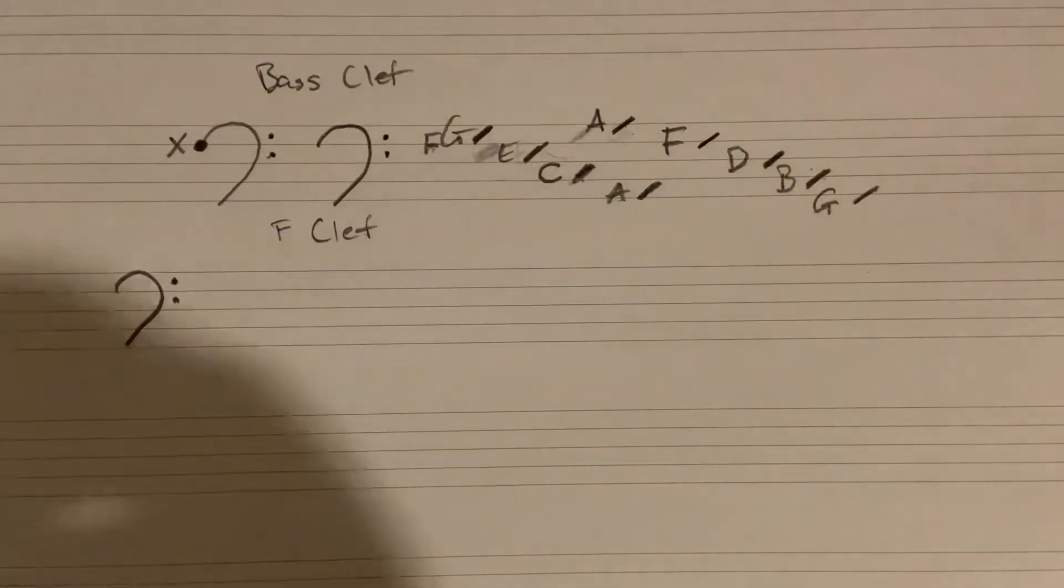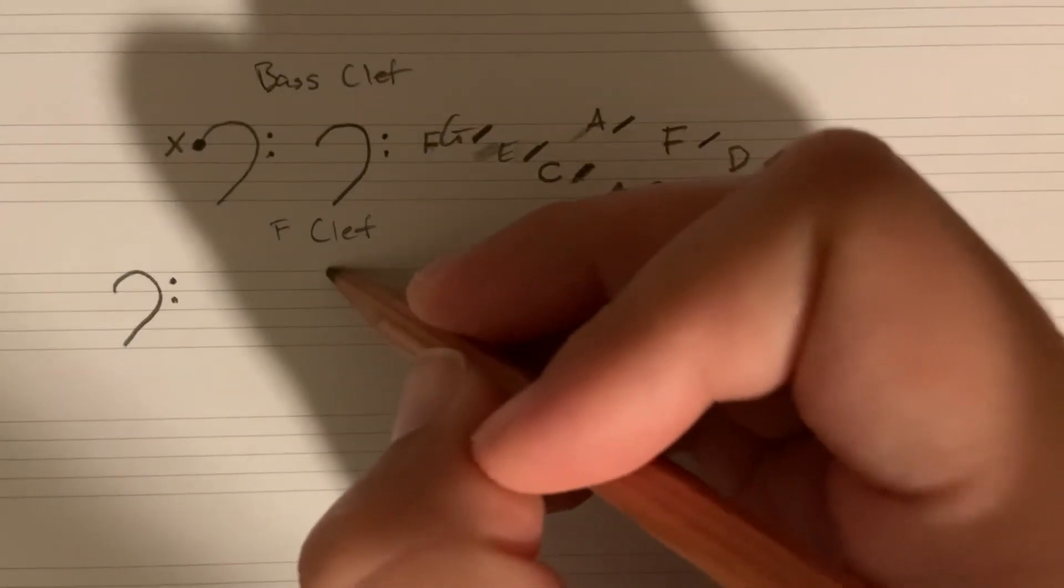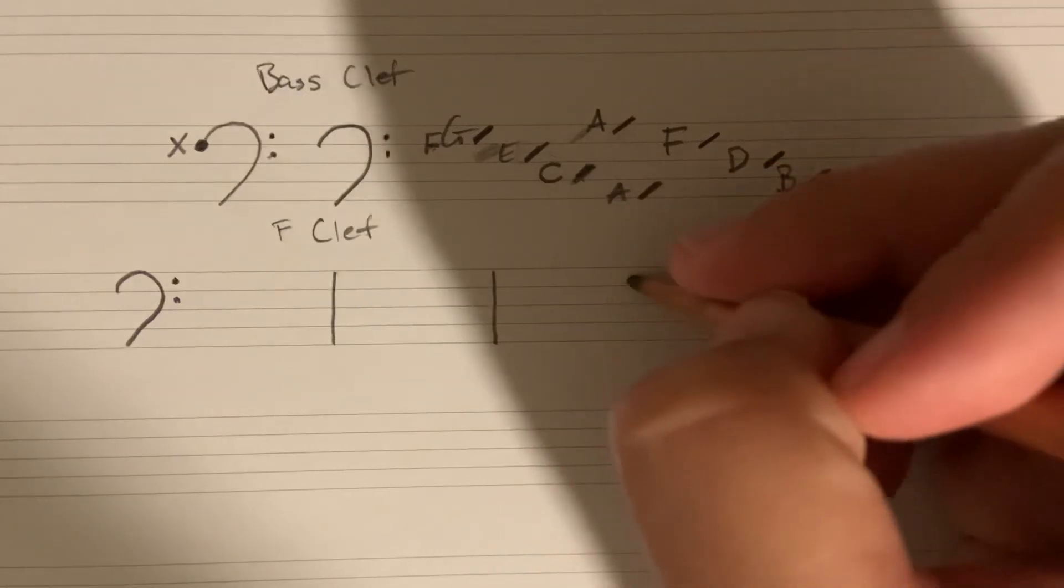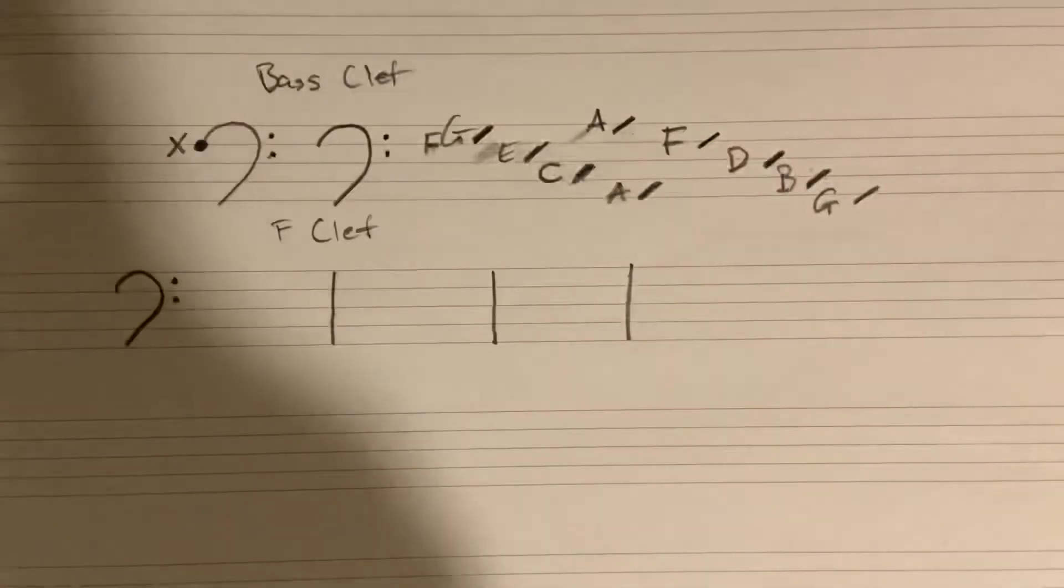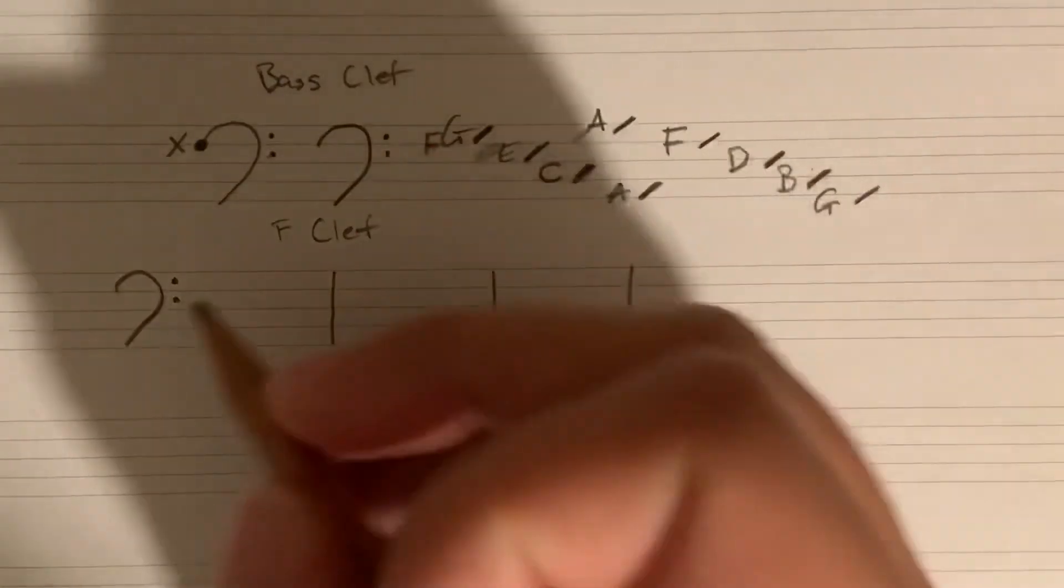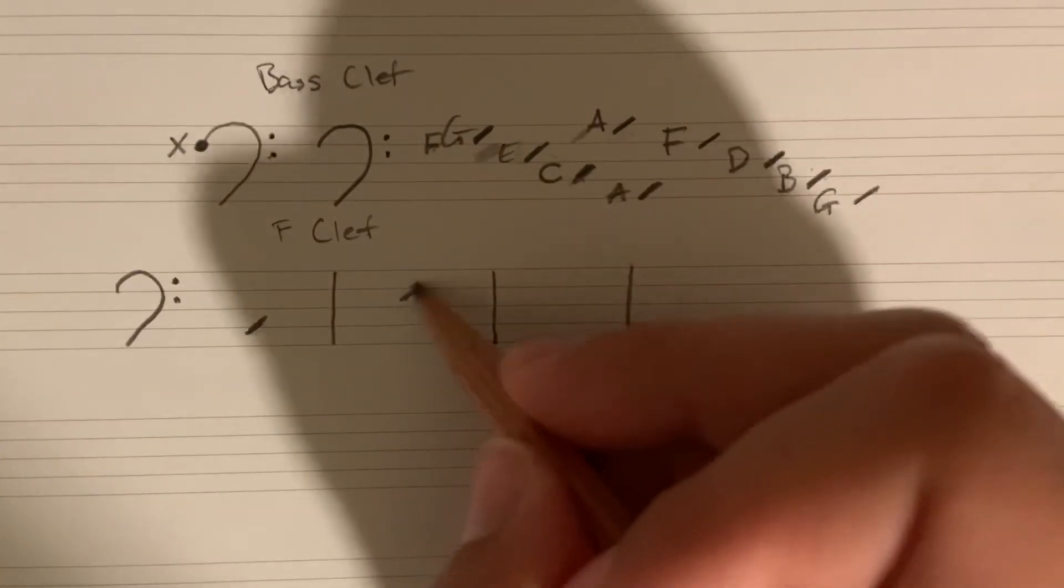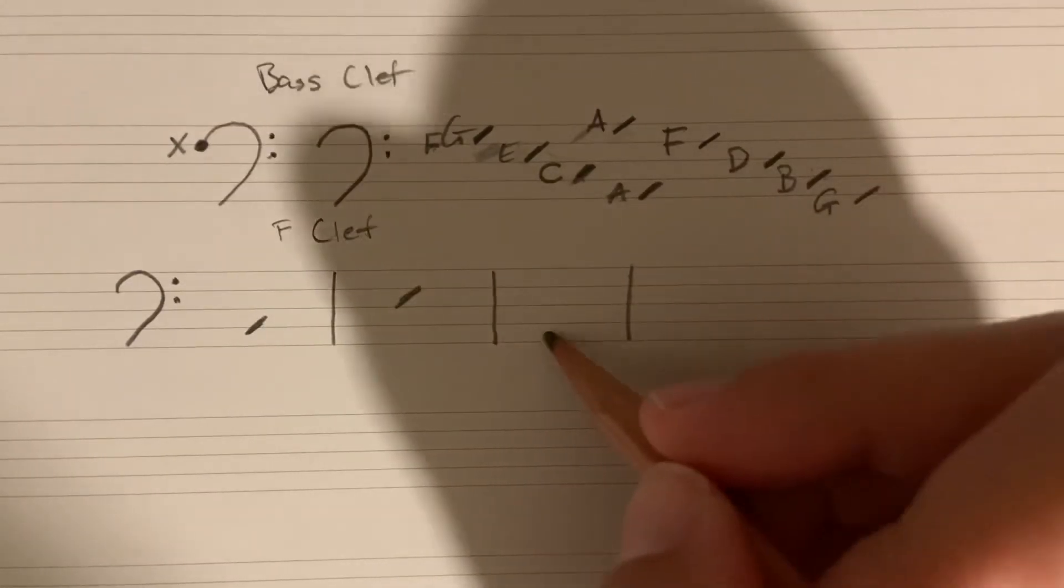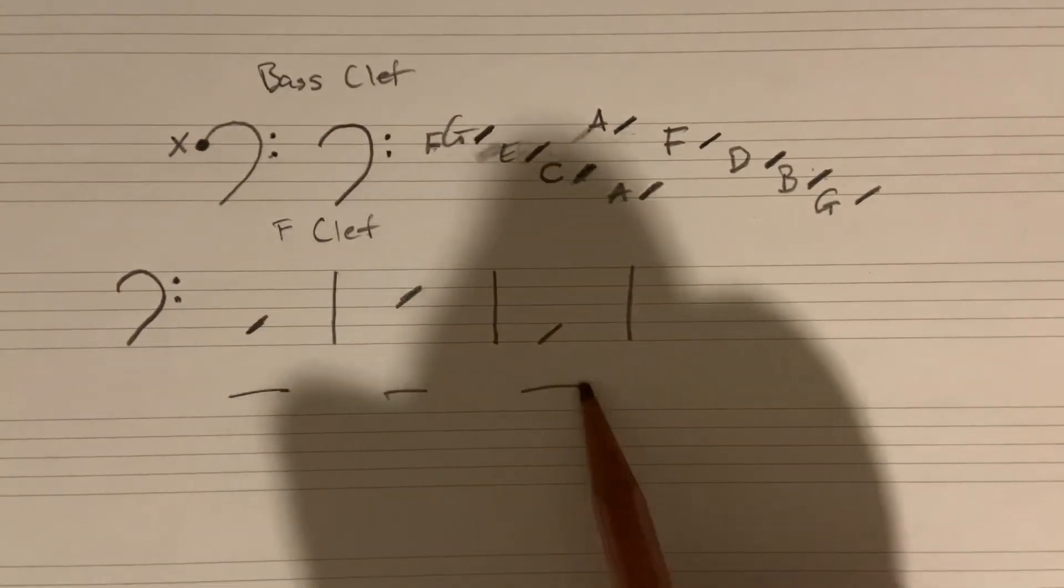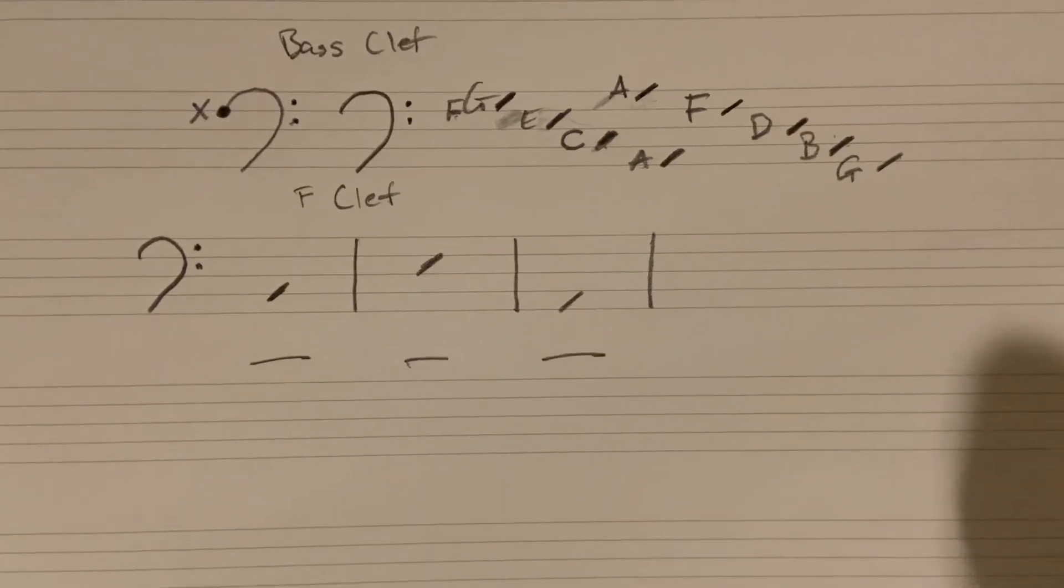Here's your next assignment. I'm going to draw a note head. I'll draw three different note heads here, and I would like you to identify the note under the staff. So we'll go here, here, and here. So what you're going to do down here in this space is just write the letter name of whatever note you believe that is.